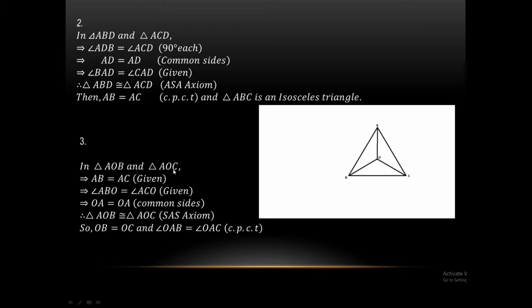Question number 3. From the diagram, triangle ABC with angle bisector.